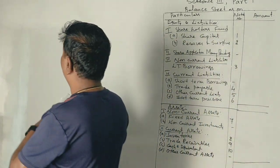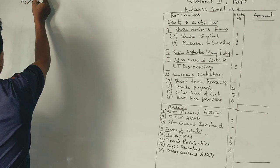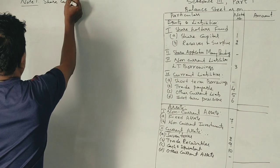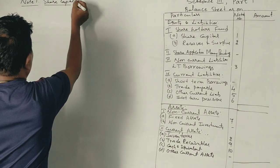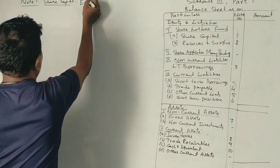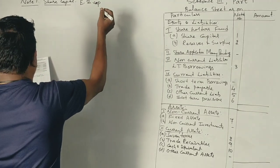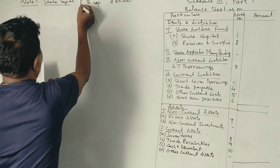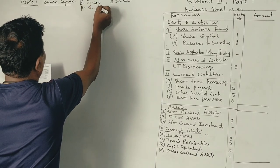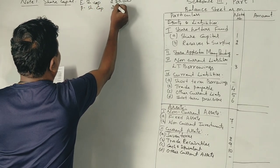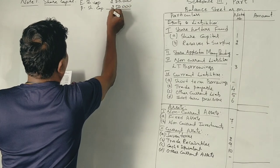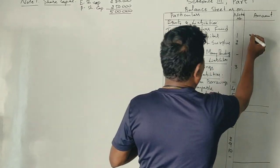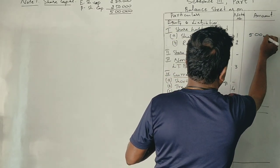Note number 1 is share capital. Equity share capital is ₹2,50,000 and preference share capital is ₹2,50,000, so the total share capital account is ₹5,00,000.